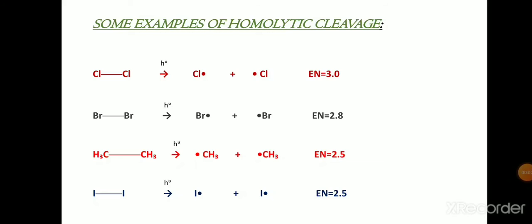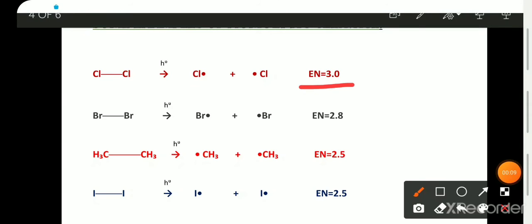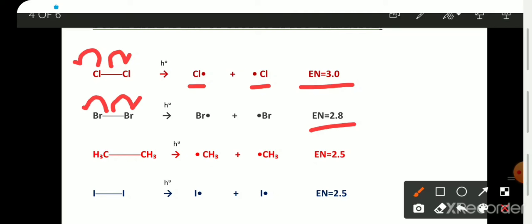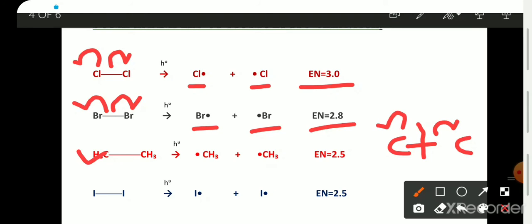Here are some examples of homolytic cleavage. Chlorine has an electronegativity of 3.0, so there will be homolytic cleavage of the bond and formation of a chlorine free radical. Bromine has an electronegativity of 2.8, so similarly homolytic cleavage takes place and bromine free radicals are formed. In the case of a carbon-carbon bond, cleavage takes place and electrons move to each carbon atom, resulting in the formation of a methyl free radical. Here also, iodine free radical is formed.